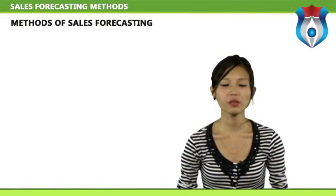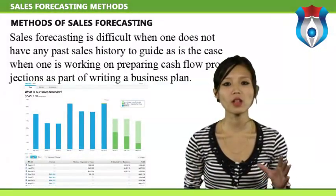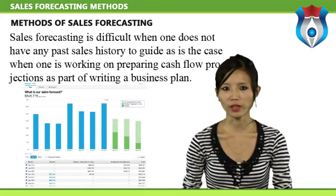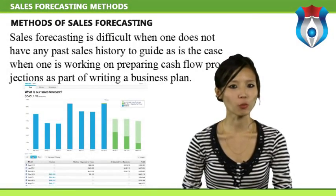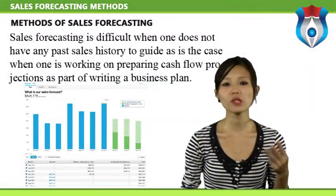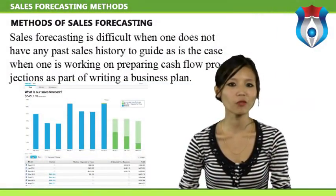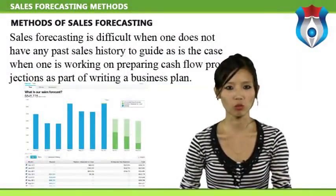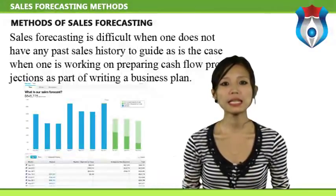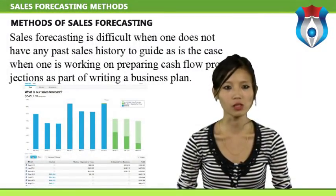Let us now discuss the methods of sales forecasting. Sales forecasting is difficult when one does not have any past sales history to guide, as is the case when preparing cash flow projections as part of writing a business plan. Three methods to estimate sales revenues are: consider the average sale volume per square foot for similar stores in similar locations and sizes; estimate the number of households needing goods within a mile and how much they would spend annually; and estimate sales revenues for each of five product or service lines.